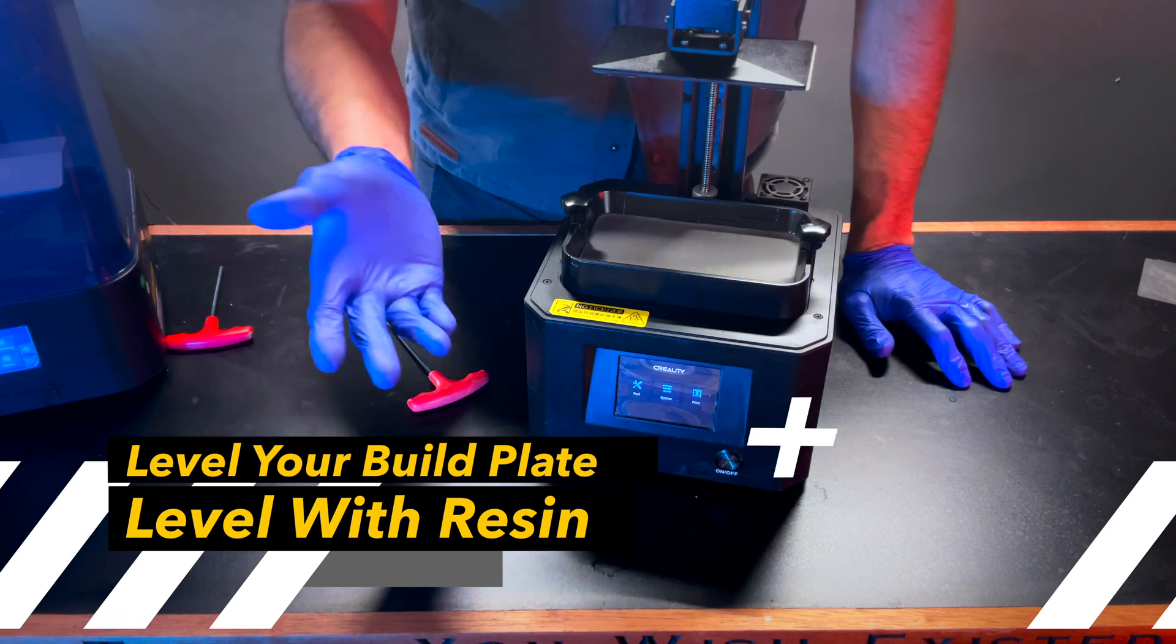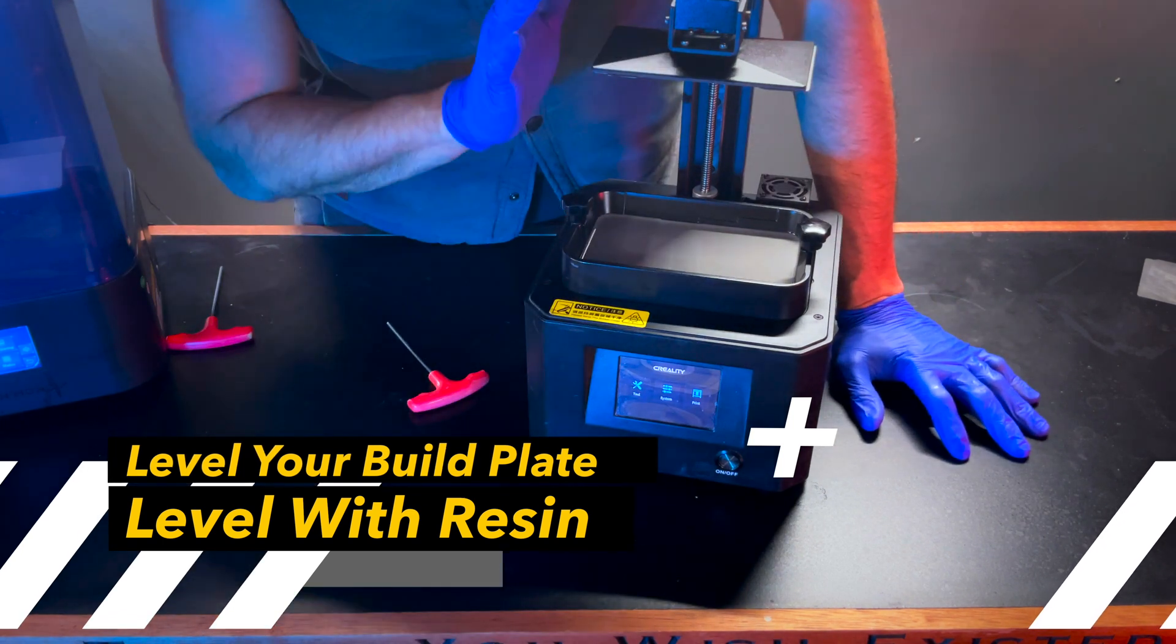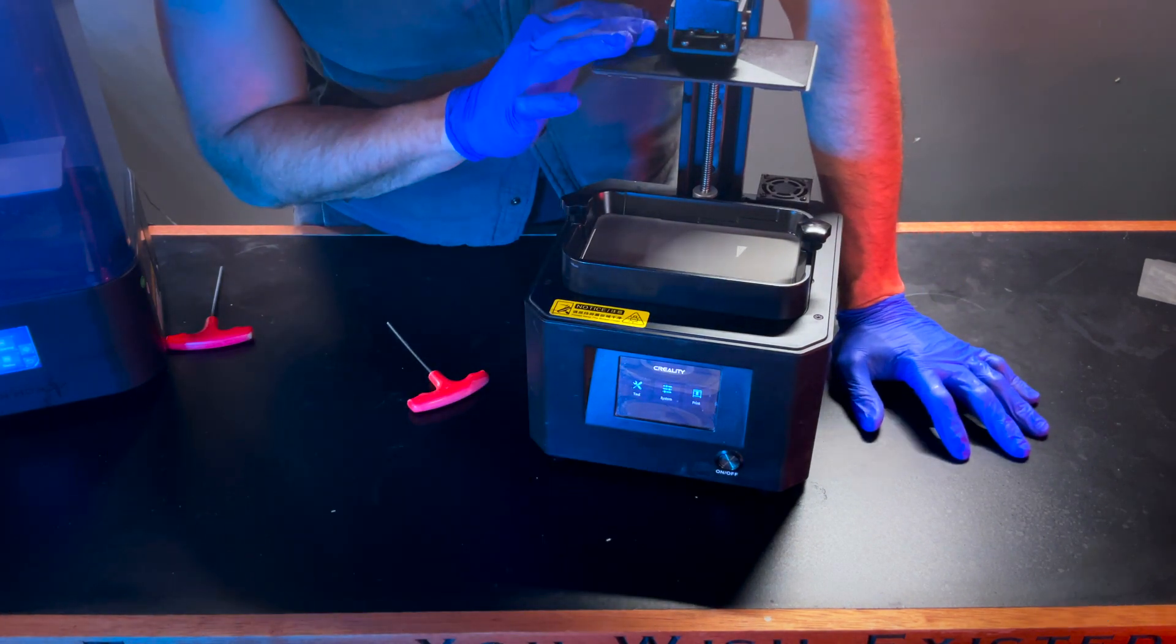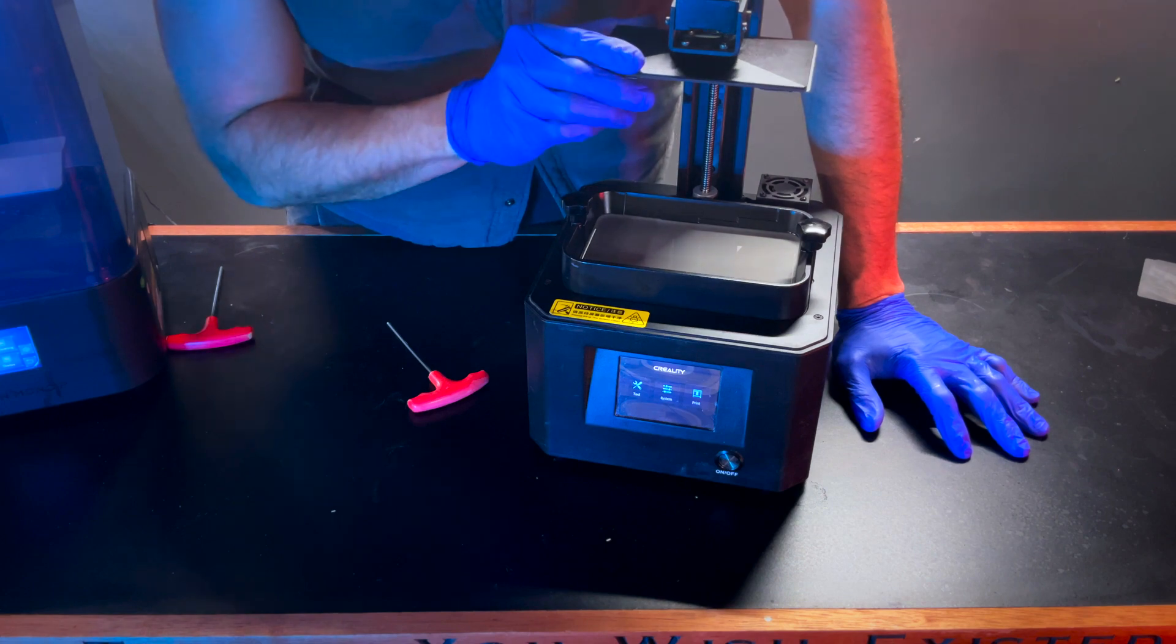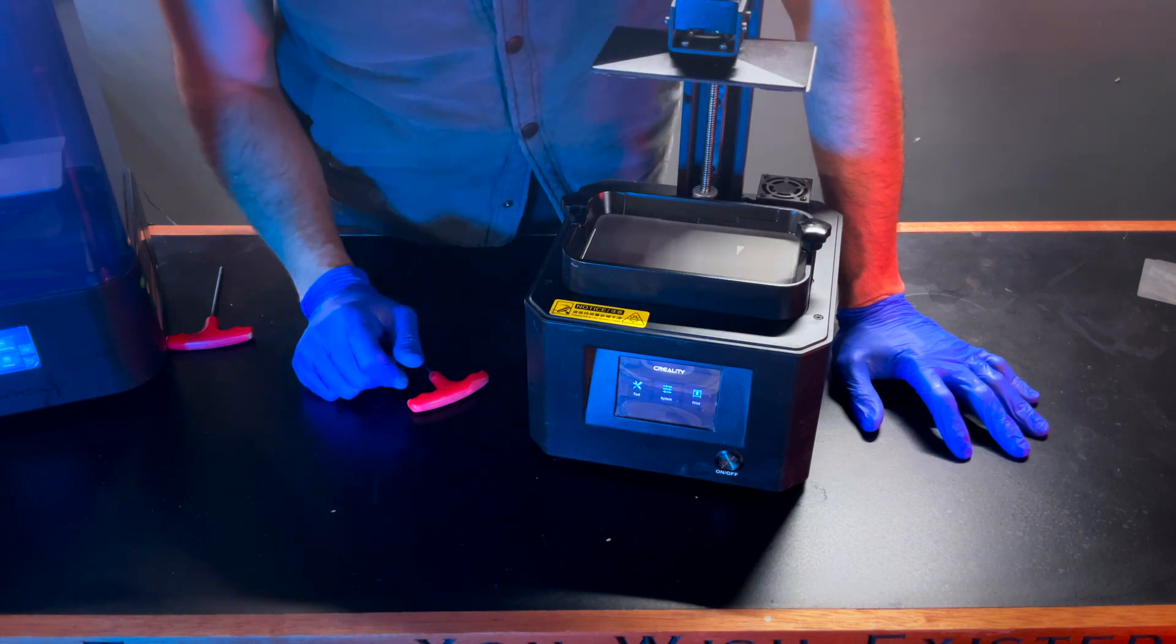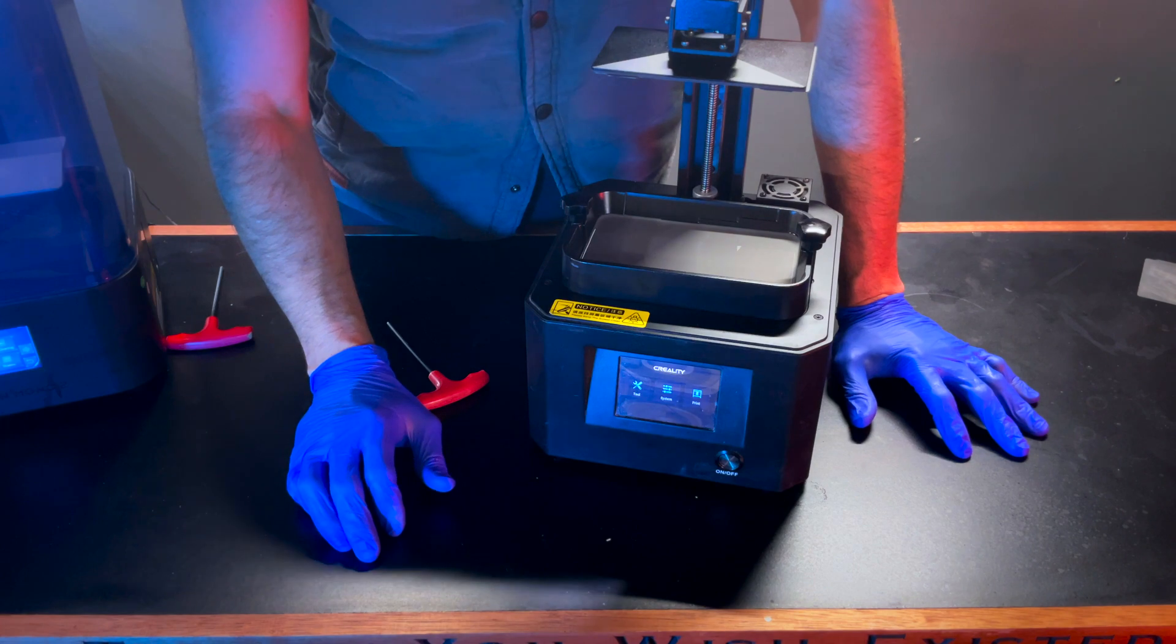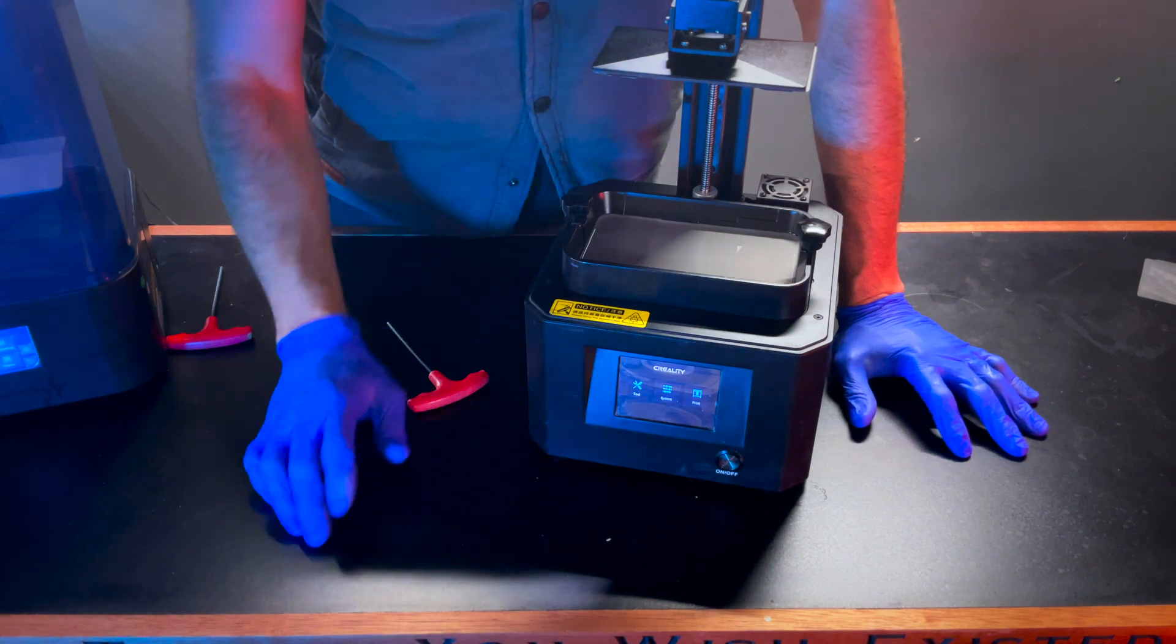Alright, so the bonus content I promised you guys. I'm going to show you how I level my resin build plate if somehow it's come loose and there is resin in the vat. This doesn't happen very often, but occasionally it does.